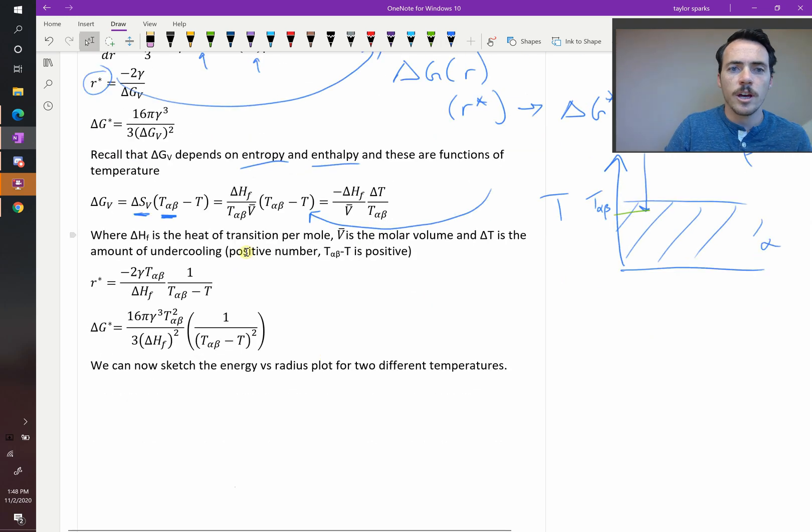Delta H_F is our heat of transition per mole. V bar is the molar volume. Delta T is the amount of undercooling. It's going to be a positive number. It's how far you are below the temperature we expected it to happen.